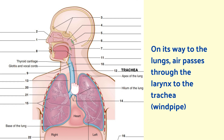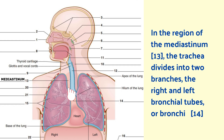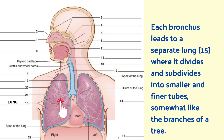On its way to the lungs, air passes through the larynx to the trachea, i.e. windpipe. In the region of the mediastinum, the trachea divides into two branches, the right and left bronchial tubes or bronchi. Each bronchus leads to a separate lung, where it divides and subdivides into smaller and finer tubes, somewhat like the branches of a tree.